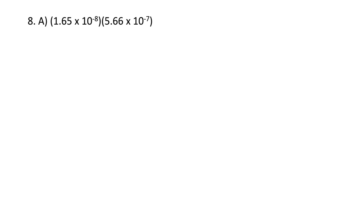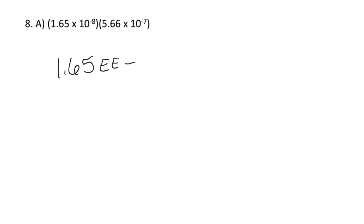For the first one, I'm going to show you how to do it with the EE button and then with parentheses. You're going to take 1.65, then hit the EE button on your calculator and negative eight. Then hit the times button, then put 5.66, hit the EE button, negative seven.